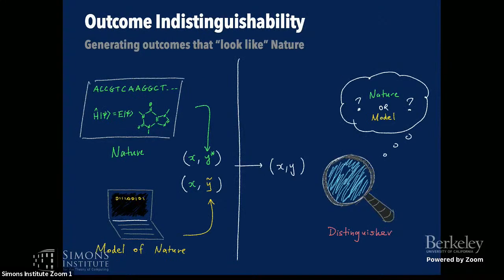It's best illustrated by this cartoon, where we think of it as a game. I give you a labeled sample — an individual X and an outcome Y — and the outcome will either be drawn from nature, the true model, or from the model I'm developing. I send this across without telling you which one I sent. The distinguisher's task is to guess whether the outcome came from nature or our model of nature. The goal is to develop a model for which the distinguisher cannot win this game better than random guessing.